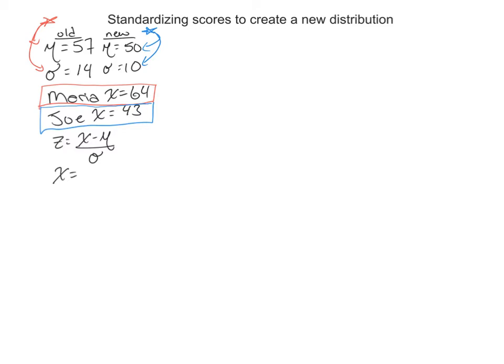So again, you remember that the Z formula right here is X minus mu divided by standard deviation. Now, this is like me saying, 15 divided by 5 is 3. It's the same thing, right? So Z equals X minus mu divided by standard deviation.